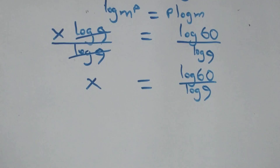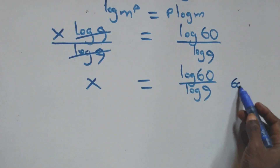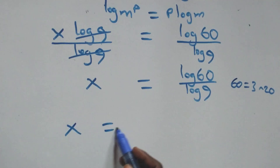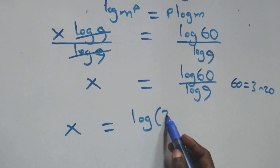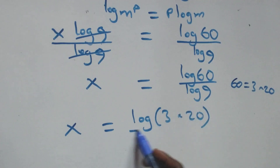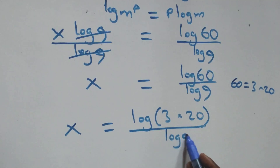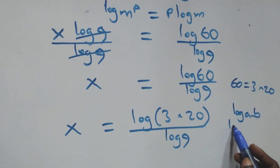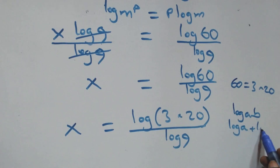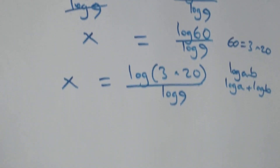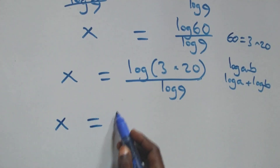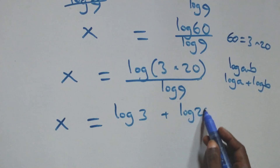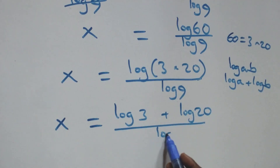From here, 60 can be written as 3 times 20, so what we have becomes x equals log(3 × 20) over log 9. This follows the rule log(a × b) equals log a plus log b, giving us x equals (log 3 + log 20) over log 9.